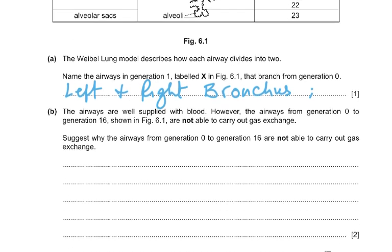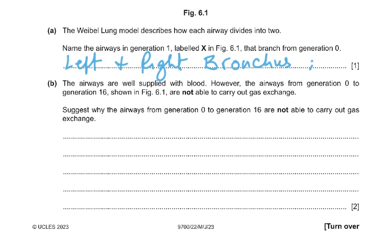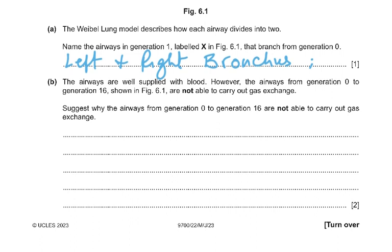The airways are well supplied with blood. However, the airways from generation 0 to generation 16 are not able to carry out gas exchange. The reasons are: the diffusion distance is too great, the wall is too thick, the time taken for diffusion to occur is too long, there are many cell layers and many tissues to pass through, and airflow is too fast. Gas simply cannot pass through the wall.